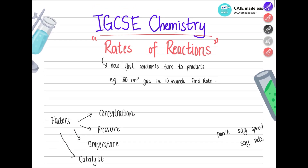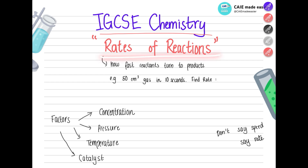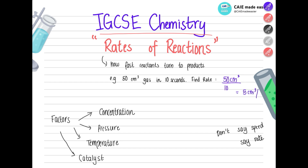Let's start with what we mean by rates of reaction. The rate basically means how fast the reactants are turning into products. For example, if you're getting 50 cm³ of gas as a product in 10 seconds, the rate would be volume divided by time — so 50 divided by 10 equals 5 cm³ per second.